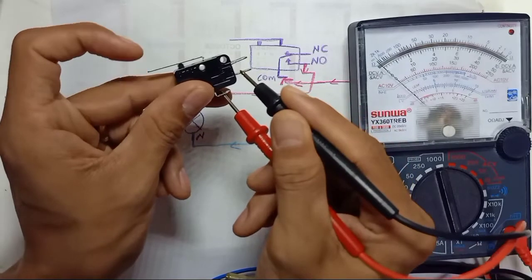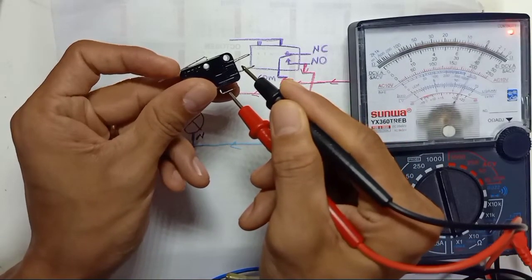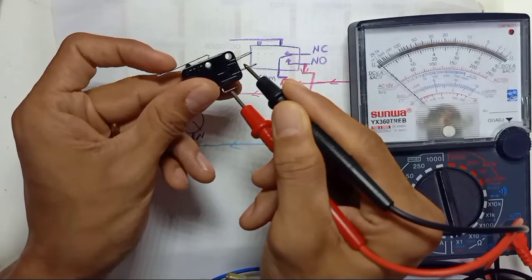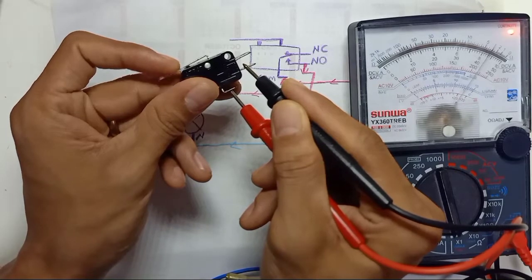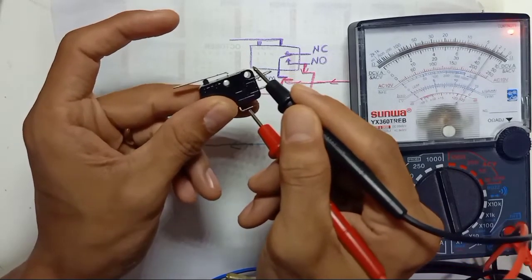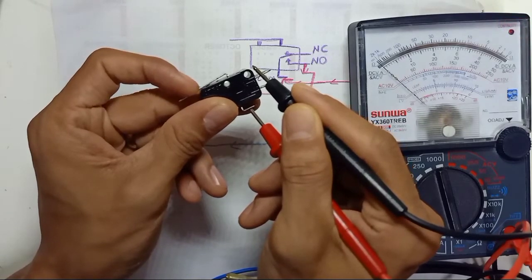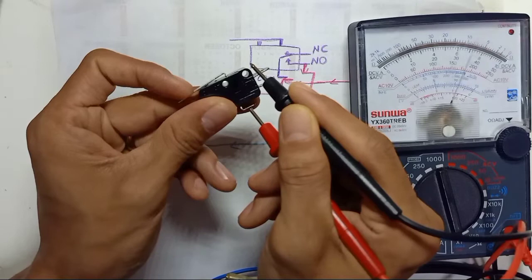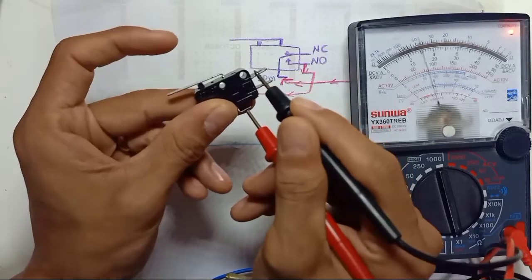Using common as the red probe of the multimeter and normally open — once you press the button, the switch will be on. On the normally closed side, once you press the button the switch will turn off. This is the difference between normally open and normally closed.